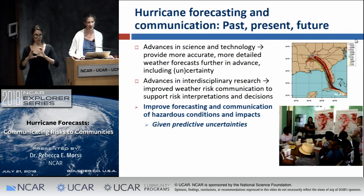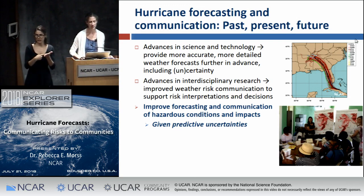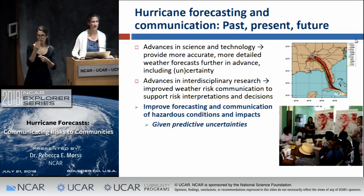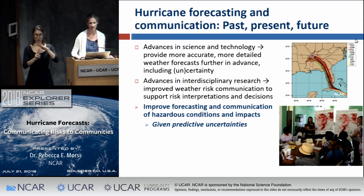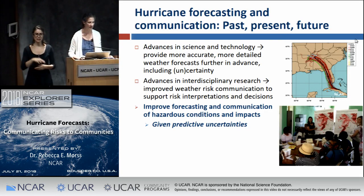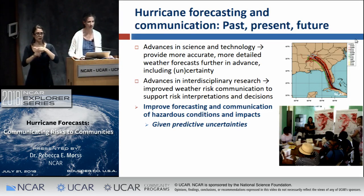Now I'll talk about key areas in weather forecasting and risk communication going into the future. The first is work to improve forecasting and communication of hazardous conditions and impacts given predictive uncertainties. Weather forecasts are inherently uncertain, making it challenging to predict exactly what's going to happen far in advance — but people need to know what's going to happen in order to make decisions.